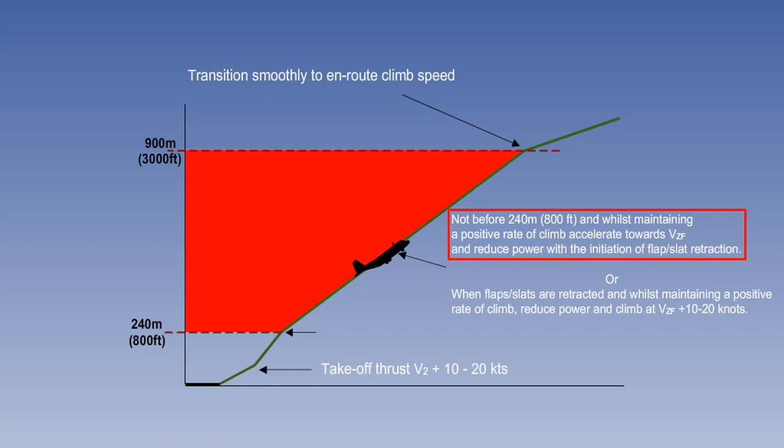In the second segment, either the aircraft climbs, accelerating towards VZF, minimum speed with zero flap, and reducing power as flaps are retracted, or alternatively, retracts the flaps and then continues the climb, reducing power and climbing at VZF, plus 10 to 20 knots.